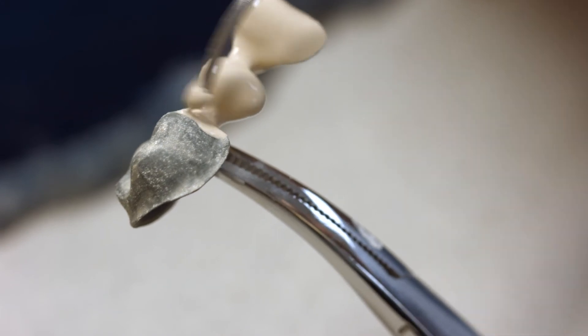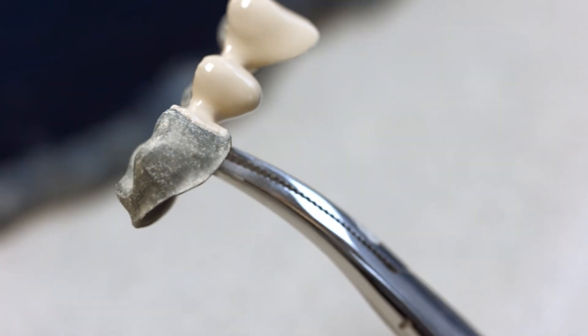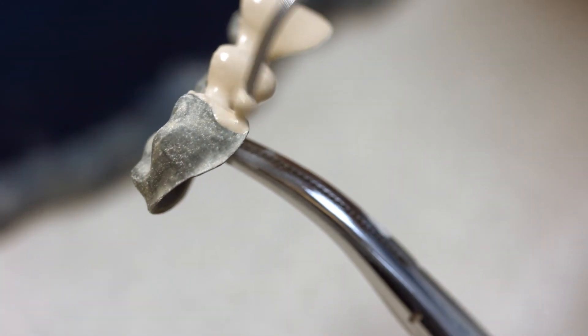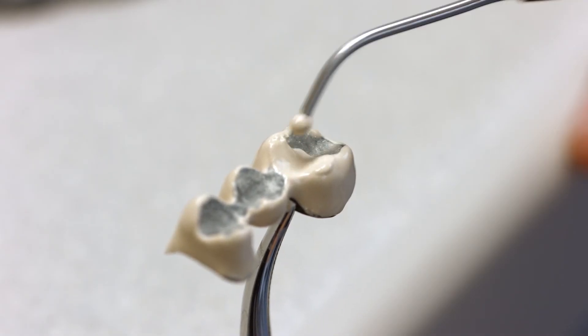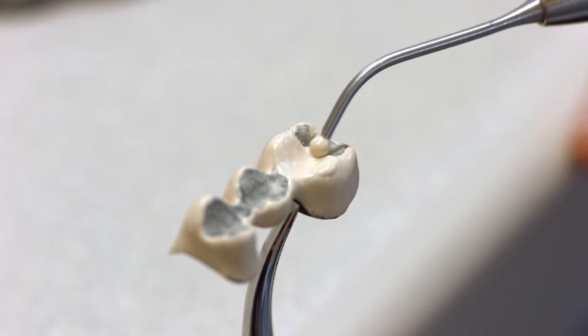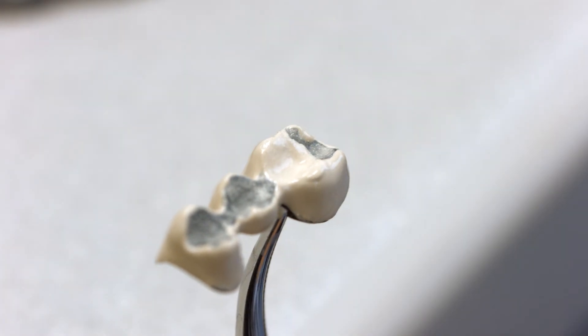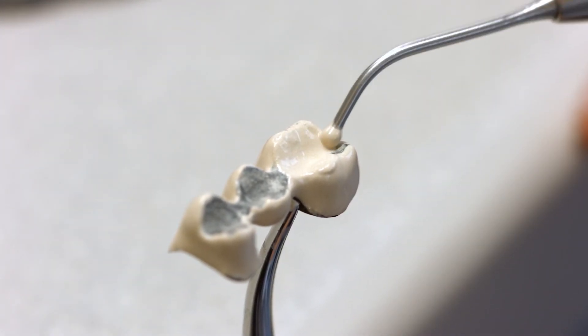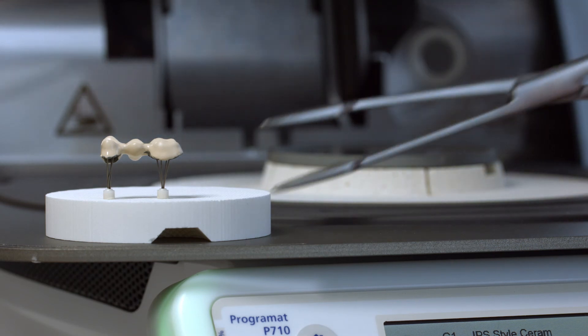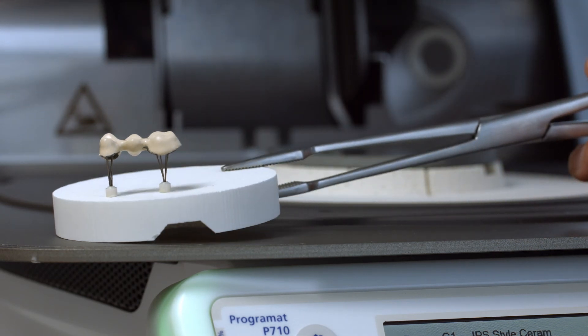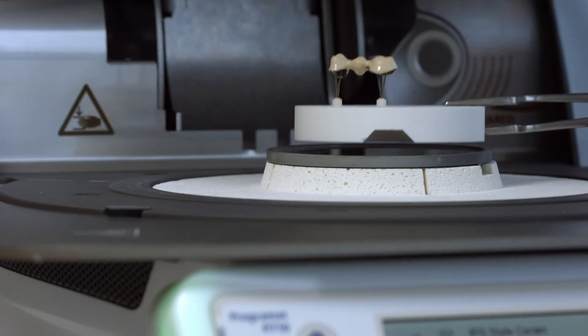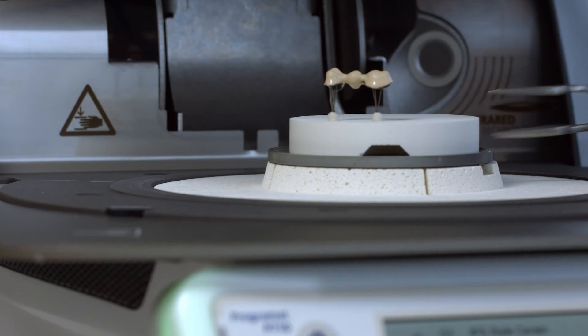The veneering surfaces of the alloy framework must be entirely covered with opaquer. Shade adjustments can be made with IPS Style Ceram Intensive Powder Opaquer before the second opaquer firing. Once the adjustments have been made, the restoration is ready for the second opaquer firing cycle.